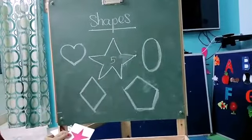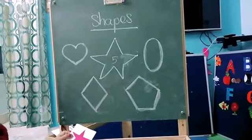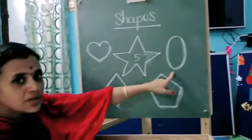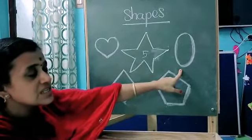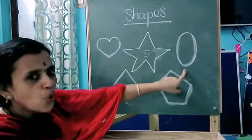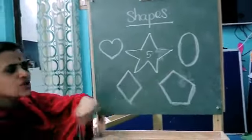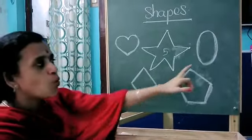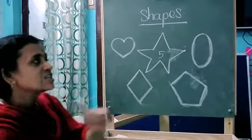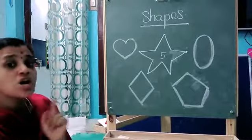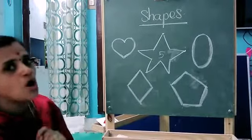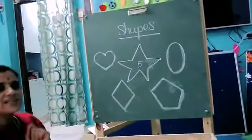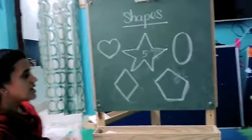How many corners for the star? Five corners. Next, what is the shape? Yes, very good — this is an oval. Does the oval have sides and corners? No — oval has no sides and no corners.